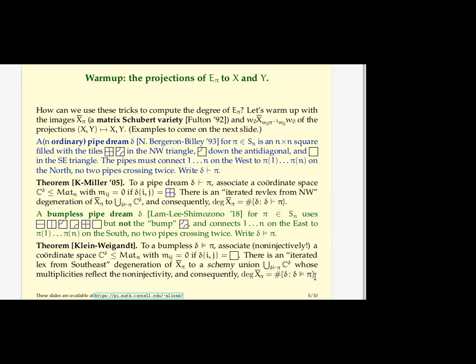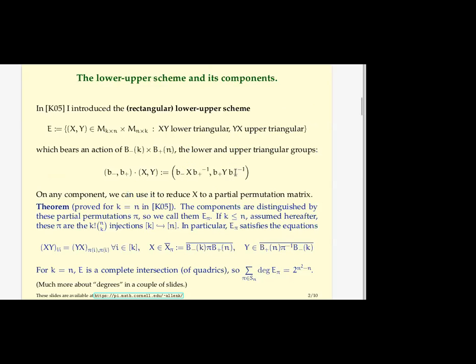Yeah, so I'm going to take my E_pi and project it to X. And if you remember, E_pi, I said here you can reduce to the case that pi is a partial permutation. And if k equals n and you're in one of these components, then you would reduce to the case that X is a permutation matrix and Y is then the transpose of that, the inverse permutation matrix, times a diagonal matrix. That's the lower upper condition.